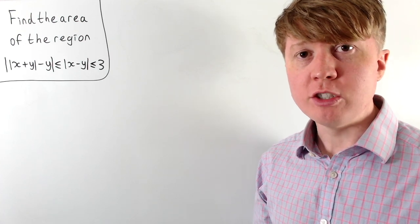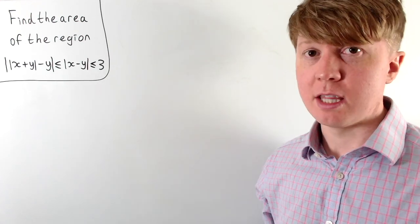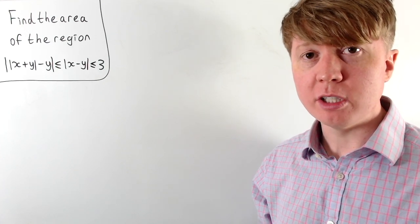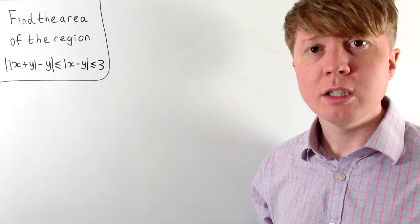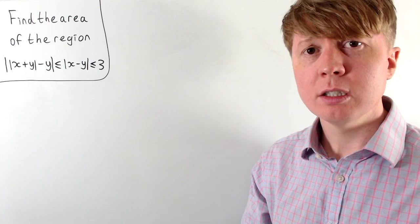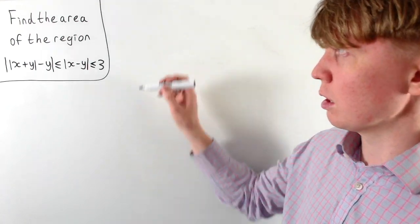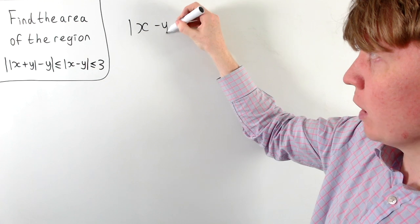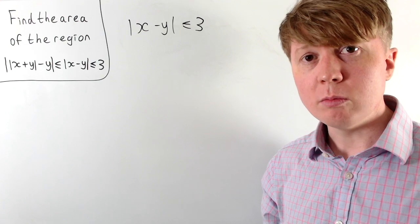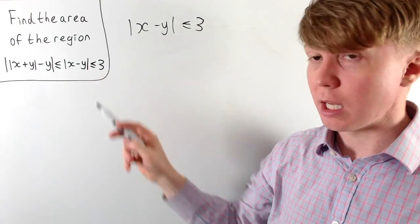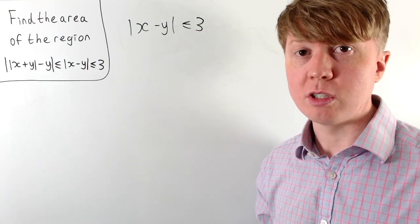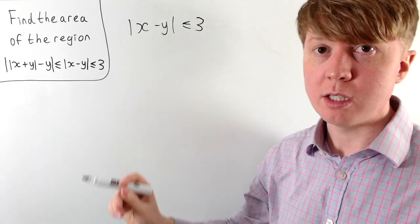We're going to find the area of the region defined by these inequalities in the x-y plane. Our approach involves breaking this up into some smaller, simpler steps to try and sketch this region. Then once we've got a sketch of the region, we'll actually evaluate the area of it. We'll focus on each inequality separately, sketch each region, then find where those two regions overlap — those are the points which satisfy both inequalities.